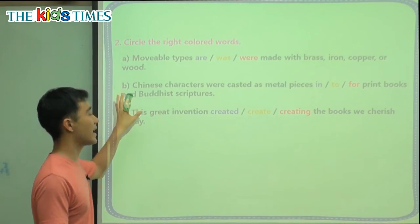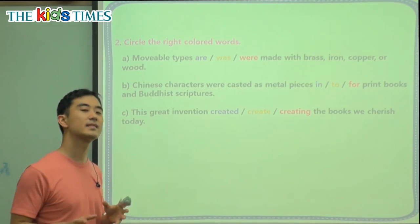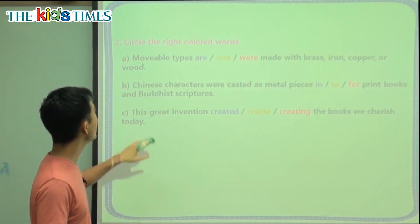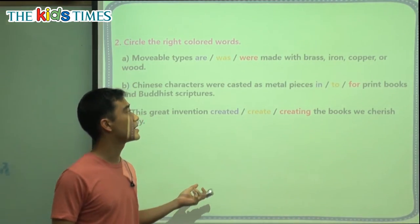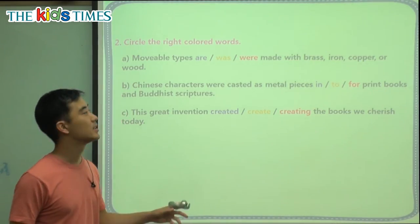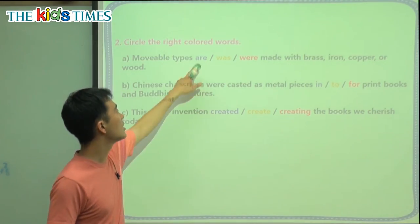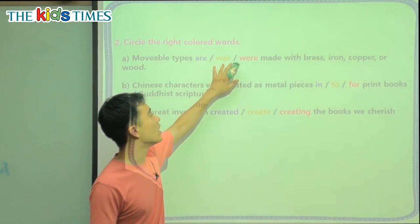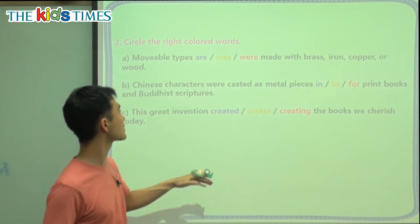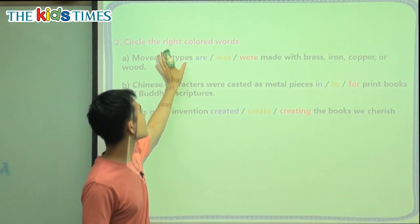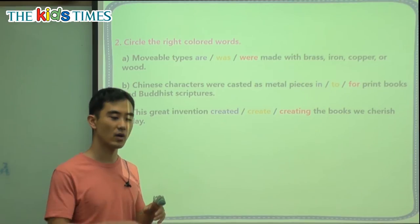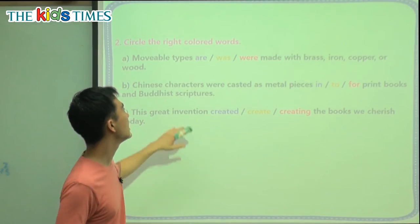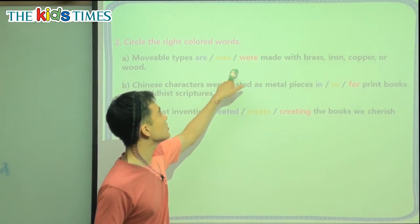We have grammar questions. Question A is a past tense question — we're talking about history, long, long ago. Movable types, blank, made with brass, iron, copper, or wood. 'Are' is not the answer — we need past tense. The choice is 'was' or 'were.' We look at the subject: movable types. We're not talking about one letter; we're talking about many letters — 26 letters. When we have many things, we choose 'were.' For example: a pencil was broken; many pencils were broken. 'Was' is for one subject, 'were' is for many.